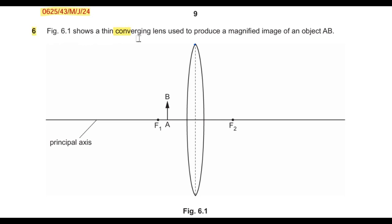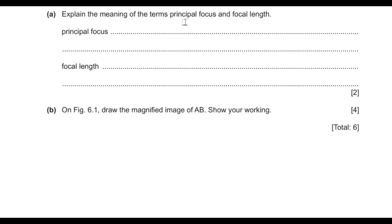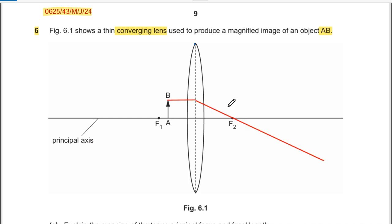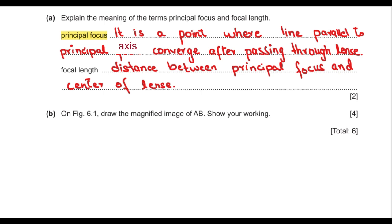From question number 6, figure 6.1 shows a thin converging lens used to produce a magnified image of object AB. The object is placed between the lens and the focal point on the principal axis. The principal focus is the point where rays parallel to the principal axis converge after passing through the lens. The focal length is the distance between the principal focus and the center of the lens.